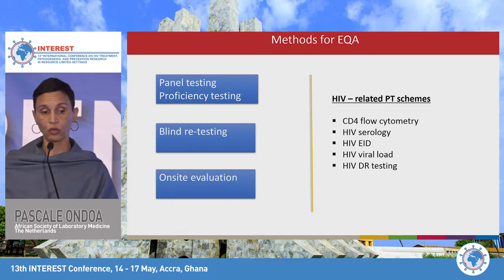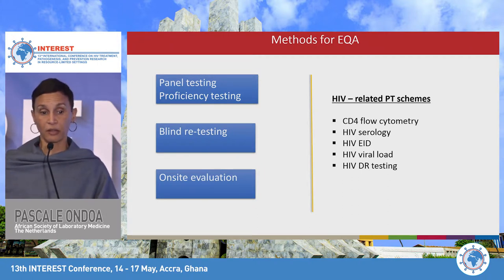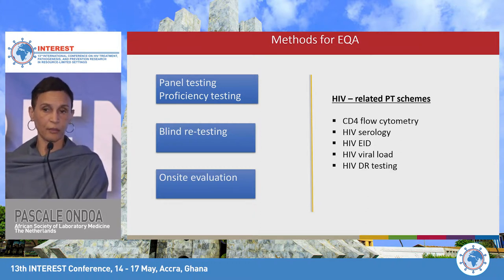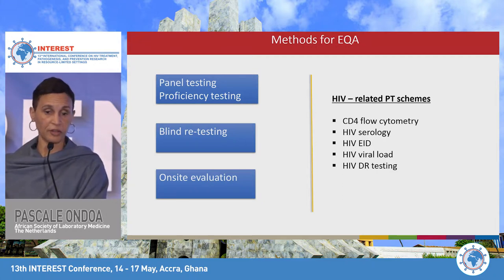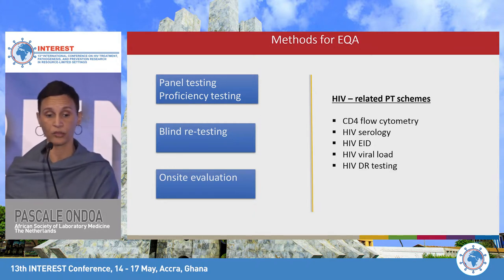There are different methods to do EQA. Most people know proficiency testing, but there are other ways — you can also do blind retesting of both positive and negative samples, and you can do on-site evaluation. However, because some of those methods are associated with cost, panel testing is done most of the time. For HIV, there are different proficiency testing schemes addressing flow cytometry, molecular testing, and serology.